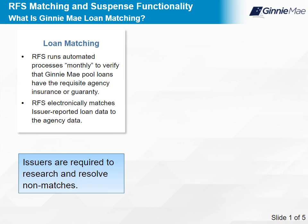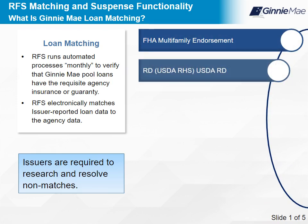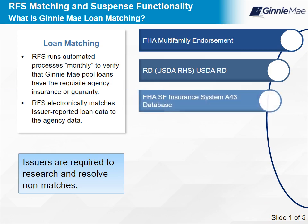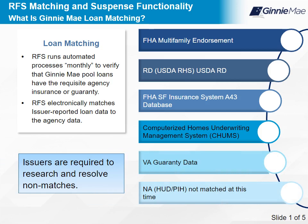Agency data reported monthly to Ginnie Mae includes the following: Federal Housing Administration (FHA) Multifamily Endorsement; RD, which stands for Rural Development, U.S. Department of Agriculture (USDA), Rural Housing Service (RHS), and USDA-RD; Federal Housing Administration Single Family (SF) Insurance System, A43 Database (SFIS); Computerized Homes Underwriting Management System (CHUMS); Veterans Affairs (VA) Guaranteed Data; NA or Not Applicable; HUD Public and Indian Housing (PIH); and Not matched at this time.